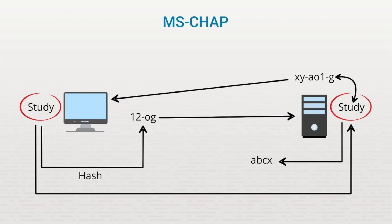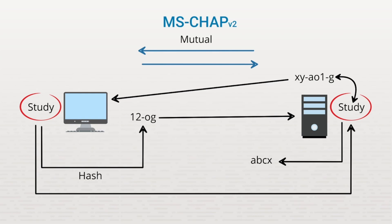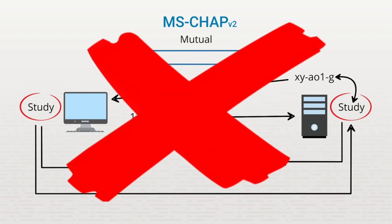MSChap has two different versions. MSChap version 2 adds mutual authentication functionality. With mutual authentication, the connecting device can verify the identity of the authenticating device — credentials can go both ways, so the computer can verify it's connecting to the right server. MSChap is no longer a secure protocol; it has several known weaknesses and security vulnerabilities, so you shouldn't use it. Both CHAP and MSChap are typically used to authenticate remote access clients.